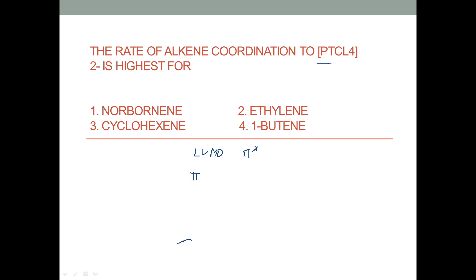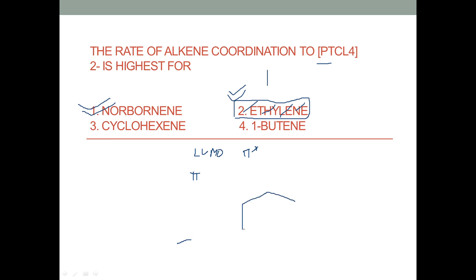You might then think that the only factor affecting the rate is steric repulsion. Since ethylene is the least bulky alkene, you might expect it to coordinate fastest. Most students marked ethylene, and many coaching center answer keys also give ethylene as the answer — but this is the wrong answer. Ethylene is not correct.